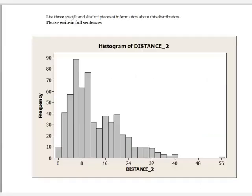In this video we are given a histogram and asked to list three specific and distinct pieces of information about the distribution. The x-axis shows the variable distance, which corresponds to the question from the student survey data in early Fall 2009: what is the distance from your home to Cincinnati State? The y-axis shows the frequency, or the number of students.